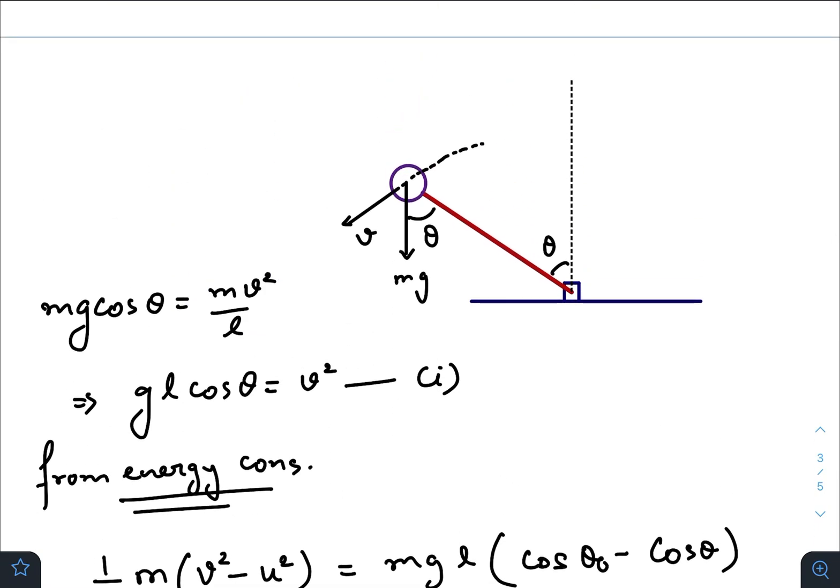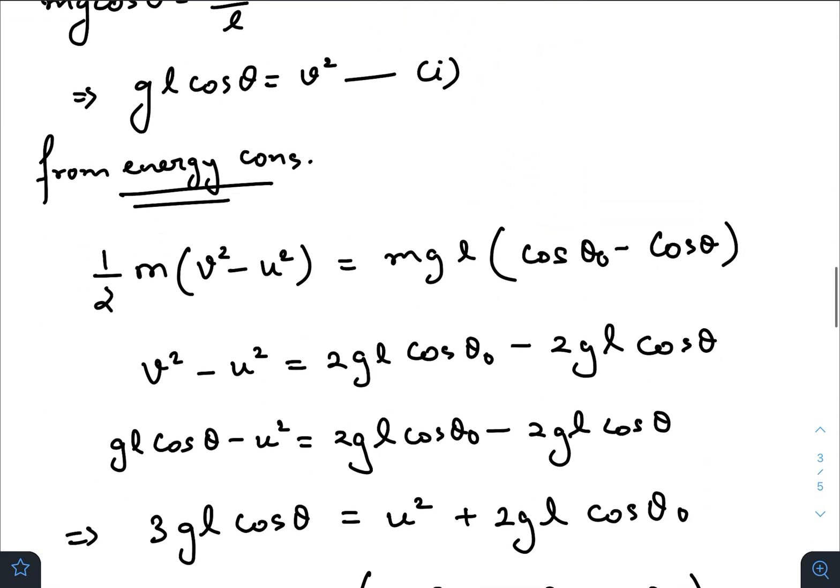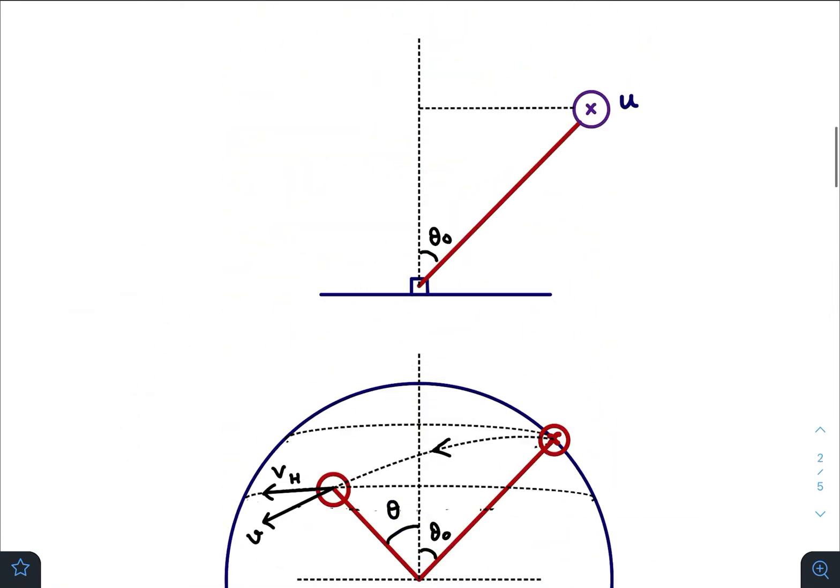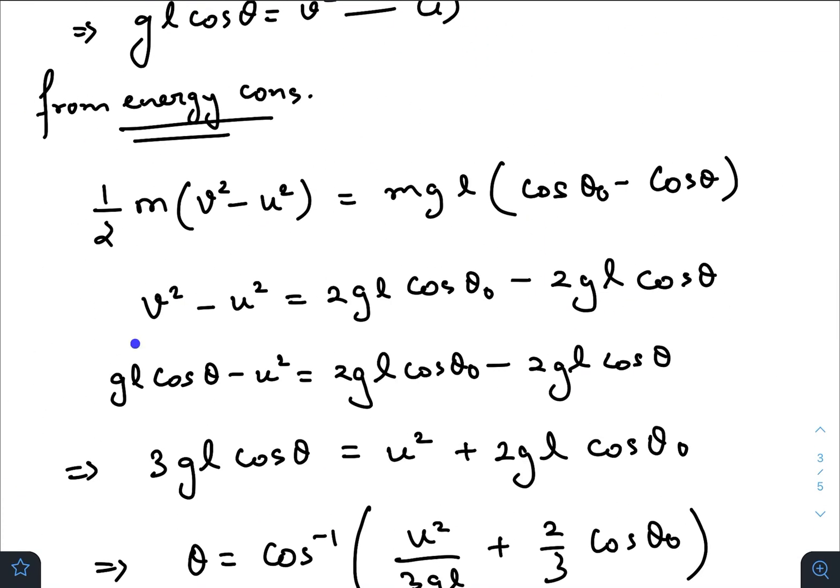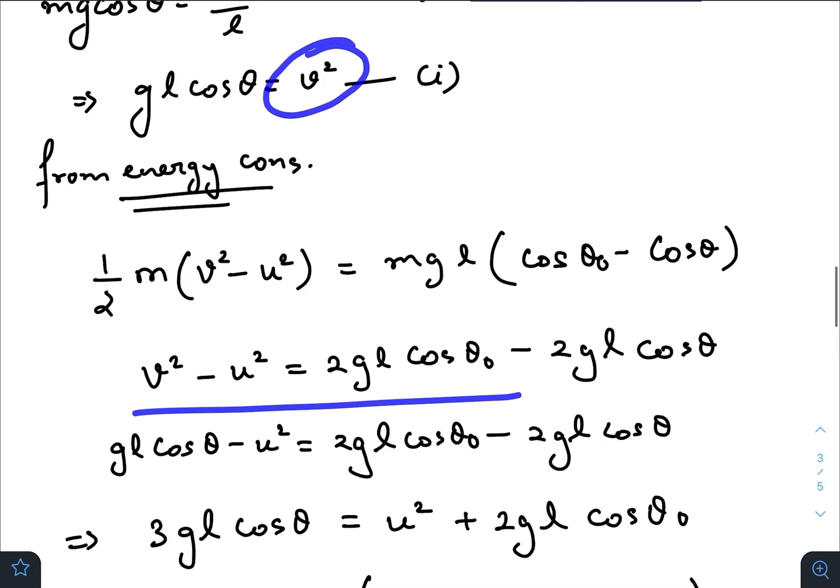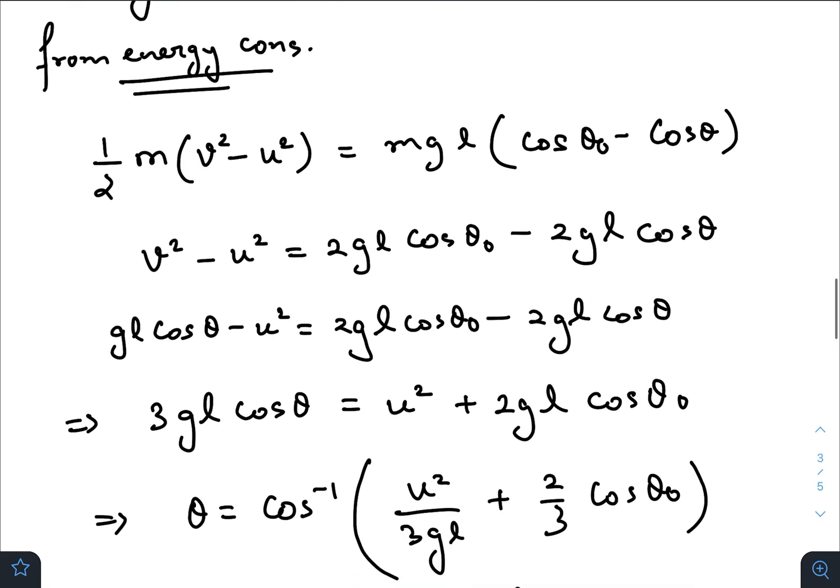Another one would be energy conservation, so increase in kinetic energy would be equal to decrease in gravitational potential energy: mgL(cos θ₀ - cos θ). So v² is this one. Using v² from here, we get—just replace it with this variable.